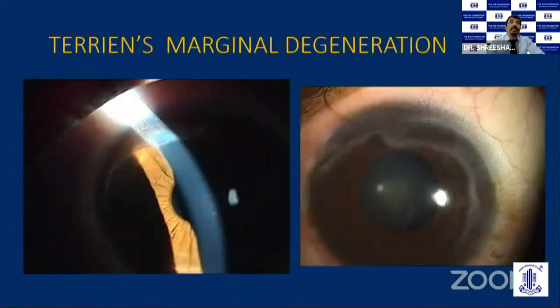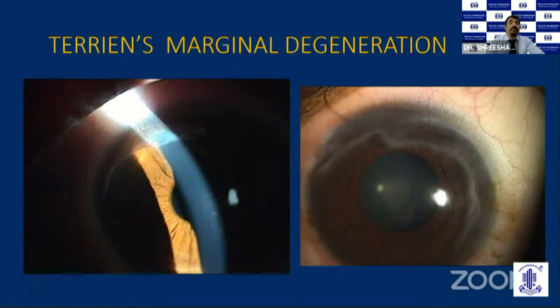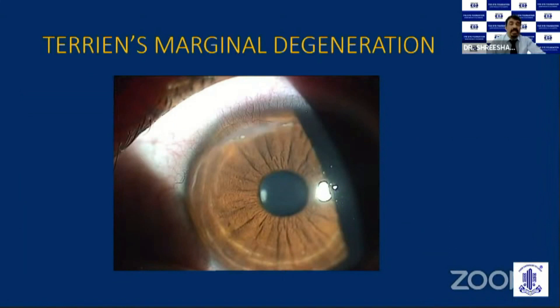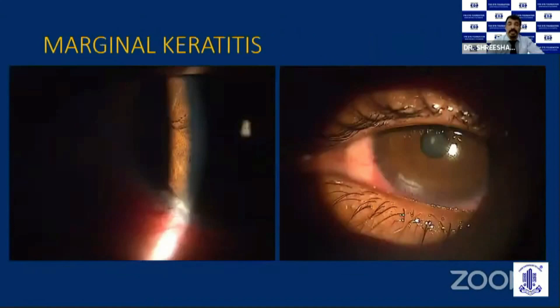Terrien's marginal degeneration is not as aggressive as Mooren's ulcer. Here we see ulceration in the superior or inferior periphery of the cornea, which progresses on the nasal or temporal side. There can be a clear cornea in between the lesion and the limbus. It is usually seen bilaterally and in males. Patients can have severe drop in vision because of photophobia or irregular astigmatism due to this gutter-like infiltration in the periphery.